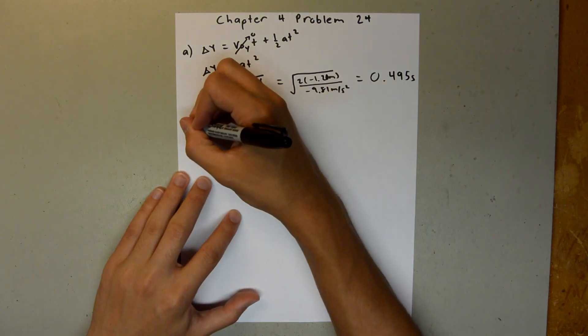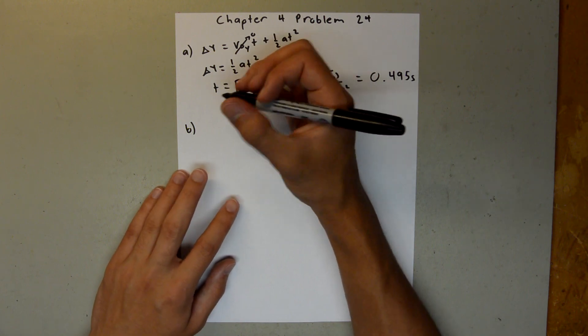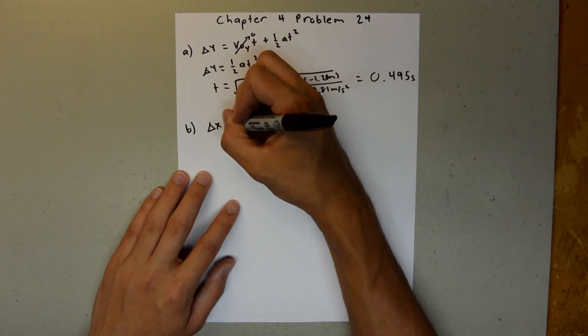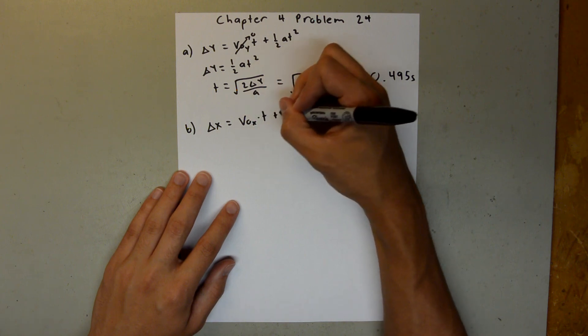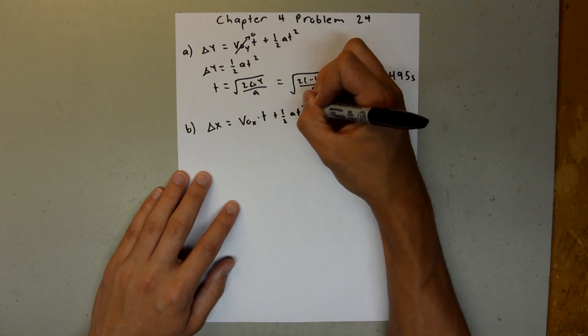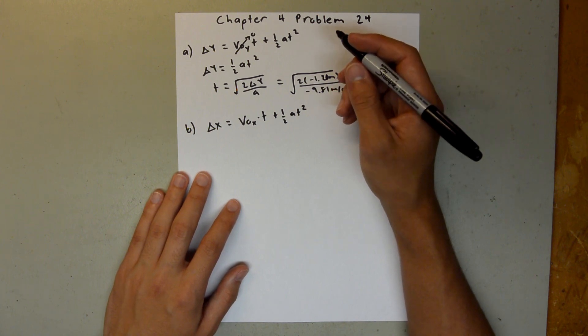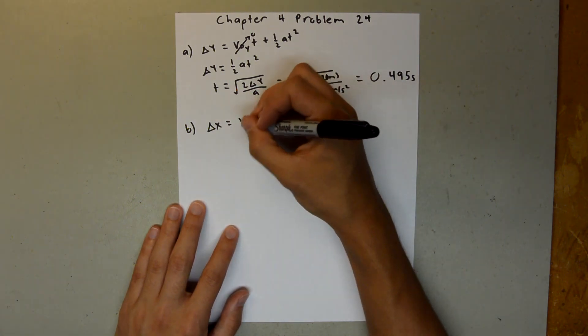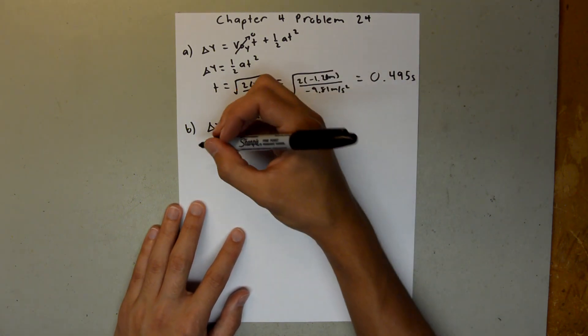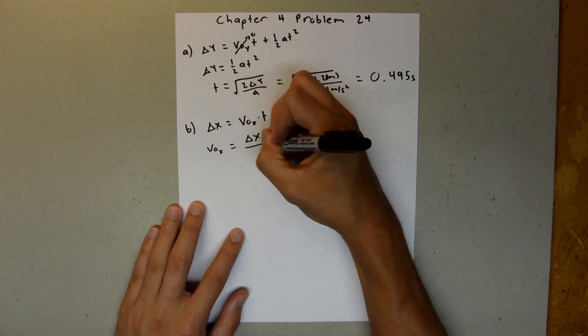And now for part B, we need to find the initial velocity, and this time we can use the same equation, just in the x direction. So delta x is equal to the initial velocity in the x times t plus 1 half at squared. And the ball is not accelerating in the x direction because it has constant velocity, so this term cancels out. And then we can solve this for the initial velocity in the x, and say the initial velocity in the x is equal to delta x over t.